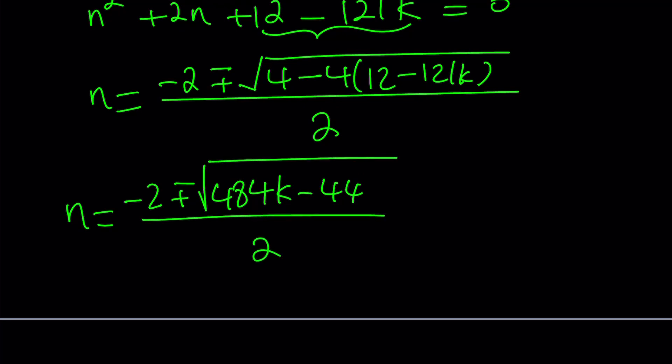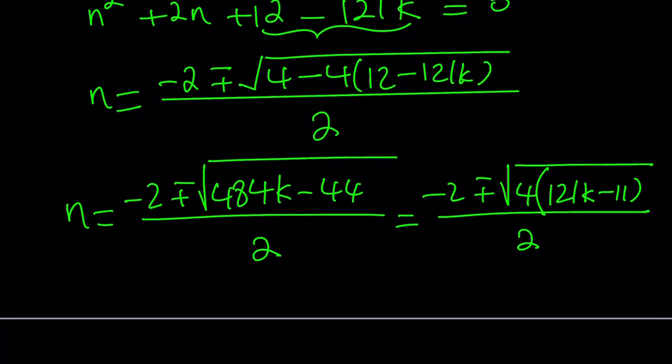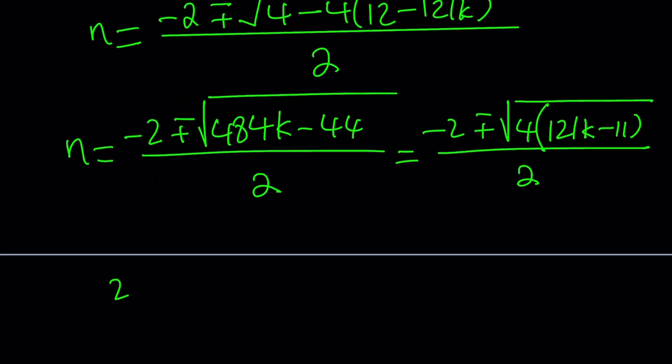Obviously, this is going to be simplified a great deal. First of all, let's go ahead and take out a 4 inside the radical. And it's going to give us 121k minus 11. And that is divided by 2. Now we can pull the 4 out as a 2 and then divide everything by 2.